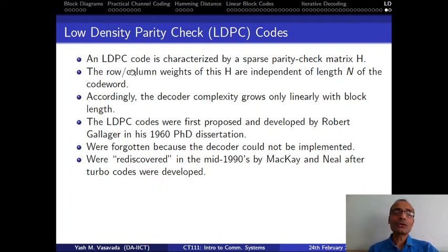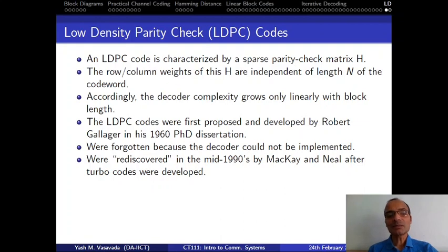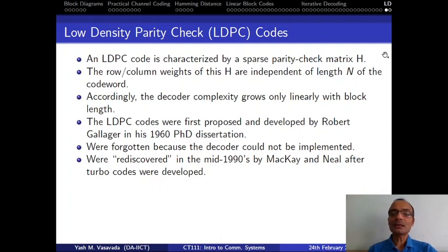For low-density parity check codes, DC and DV are independent of N. N can become large, but DC and DV remain some small values. Therefore, the decoder doesn't become highly complex even if you make the code length N large.